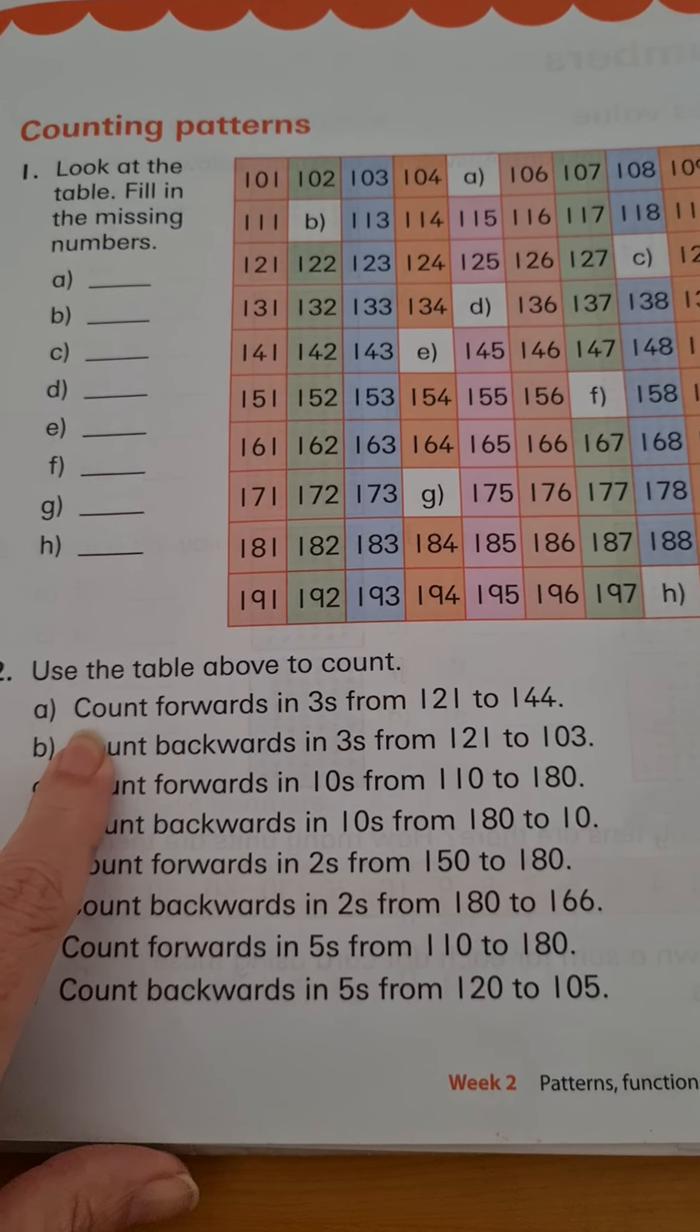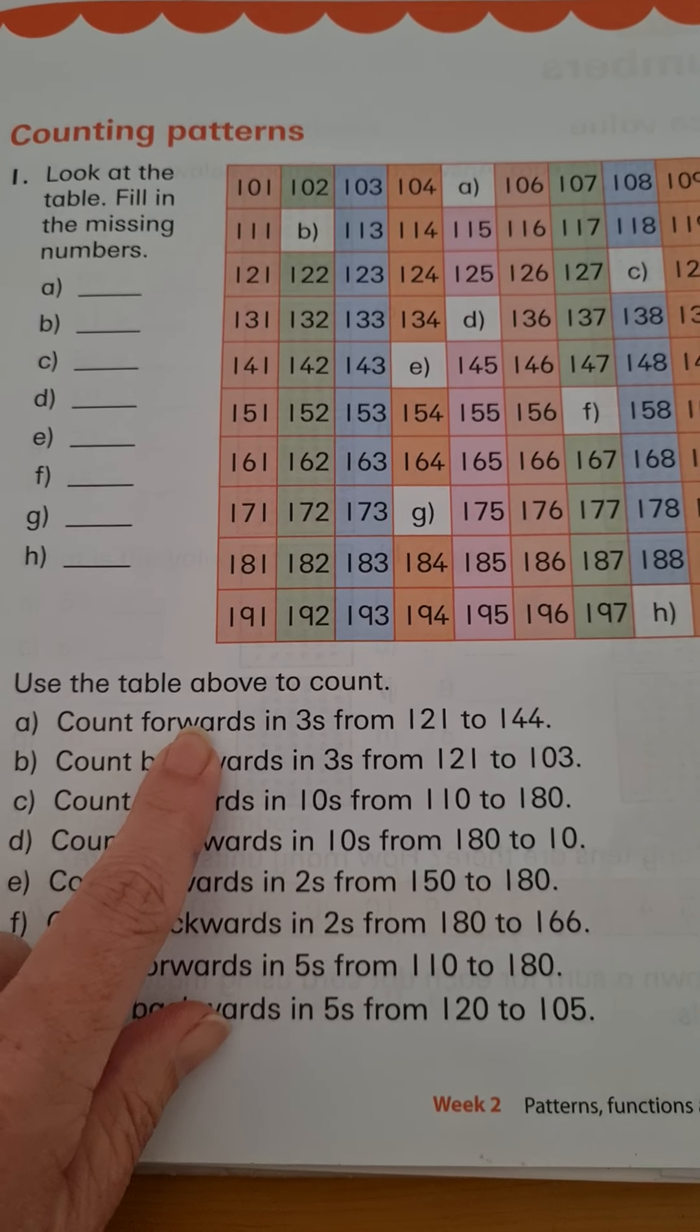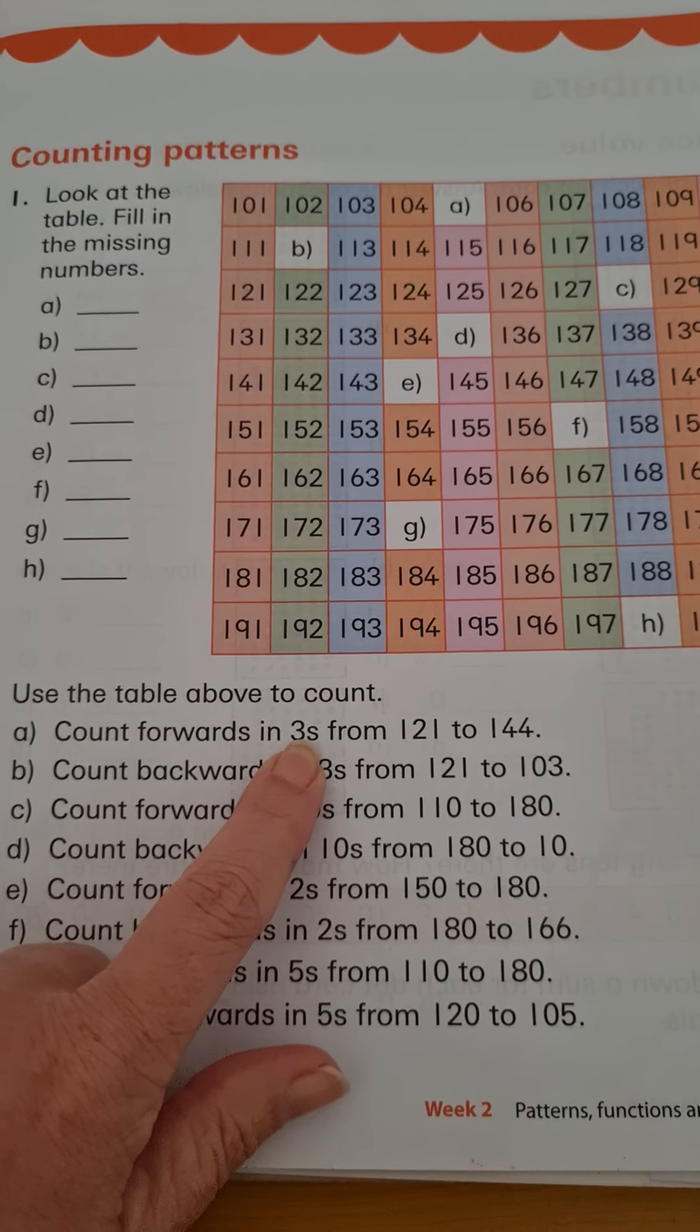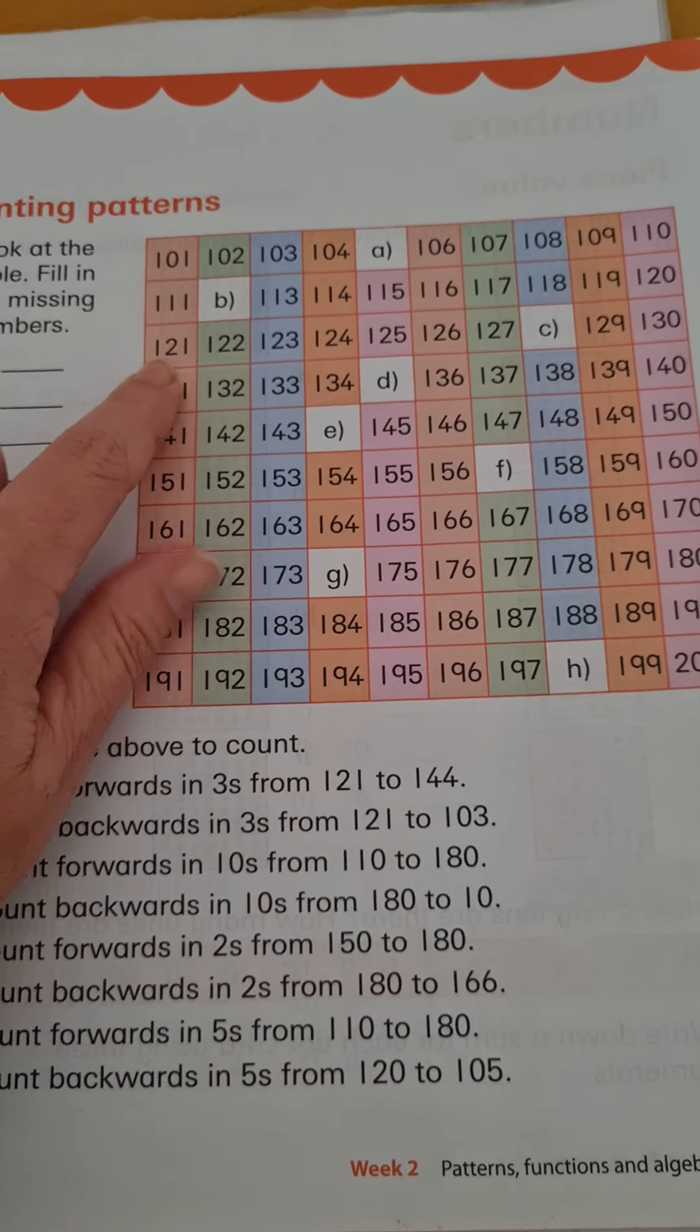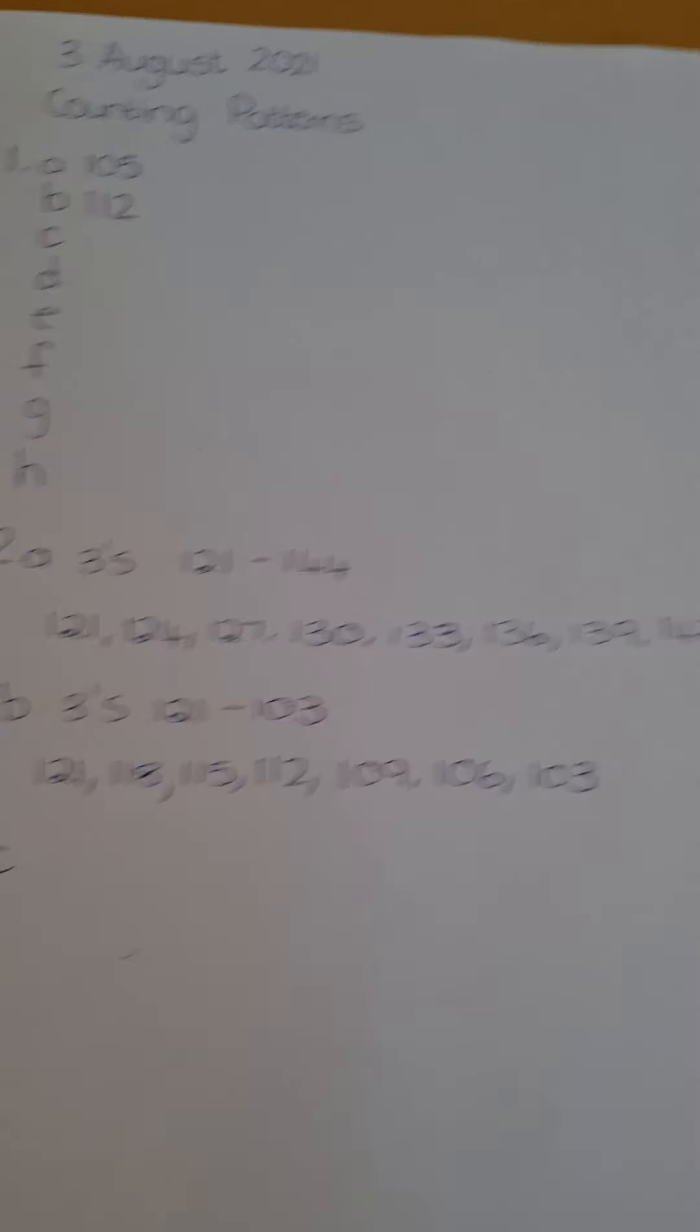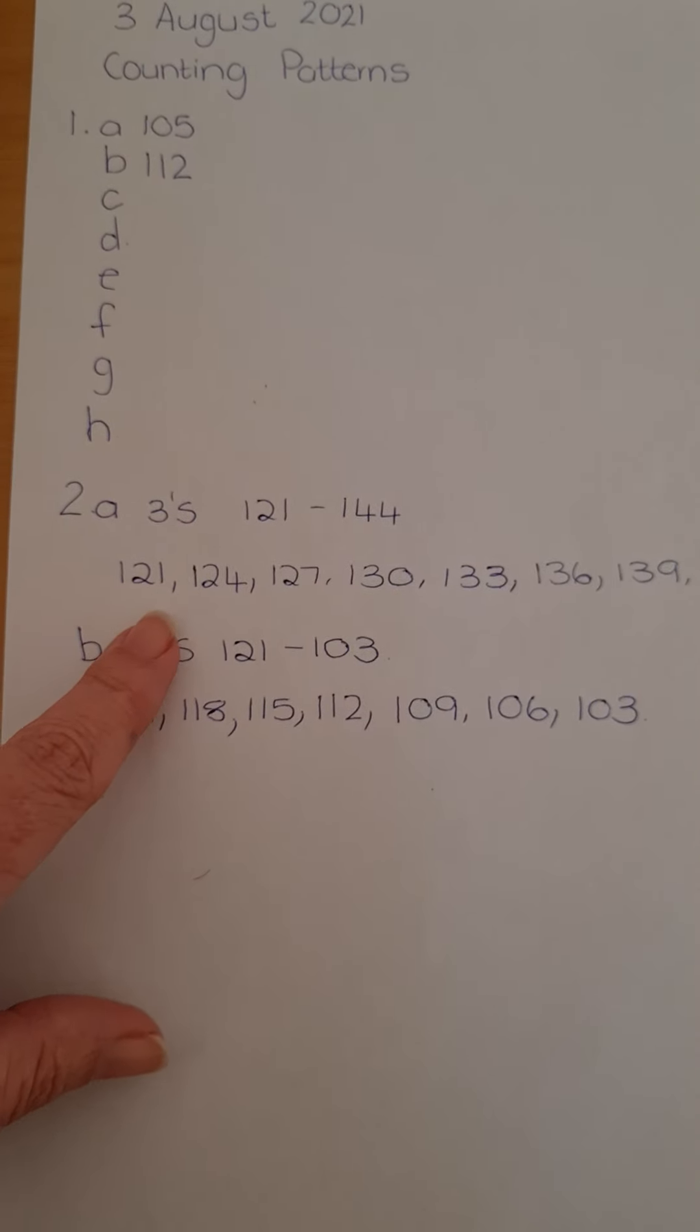Okay, so first count forwards in threes from 121 to 144. We know when we're counting forwards we are going bigger. We're counting in threes, we're going to add three because we're going forwards, and we're going to start with this number 121. So you will write that down, 121.